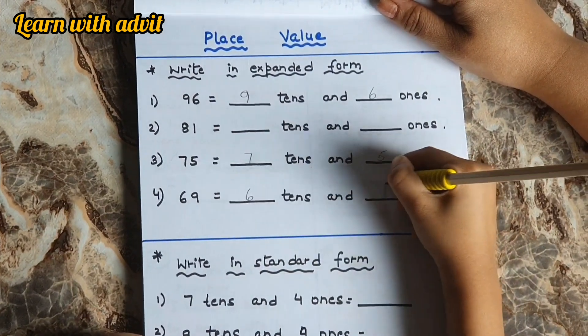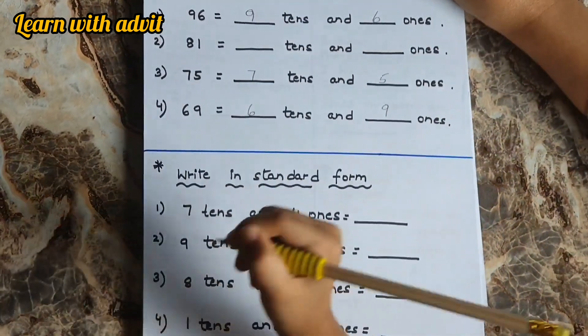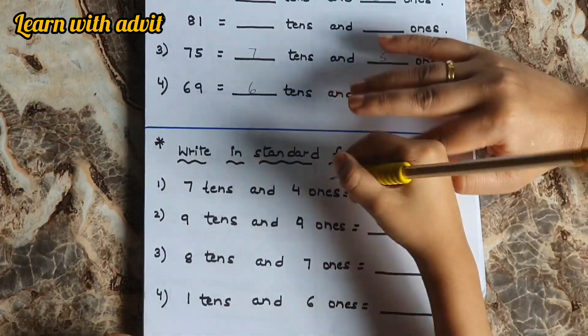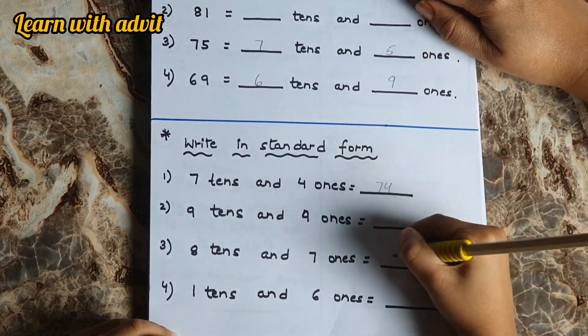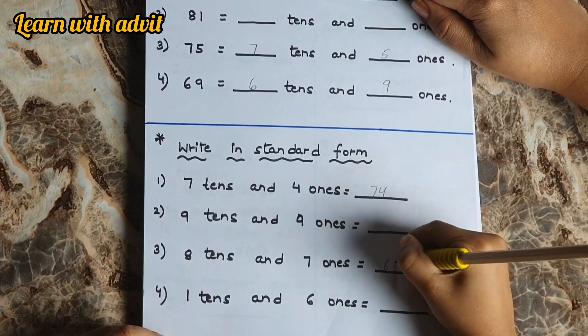In this, what you have to do is write in standard form. That means you have to write 7 tens and 4 ones: 74. For 8 tens and 7 ones: 87. For 1 tens and 6 ones: 16. Very good.